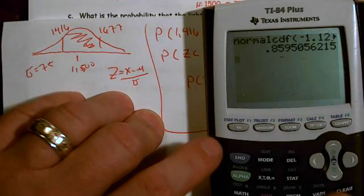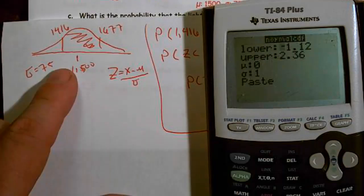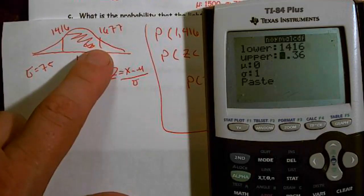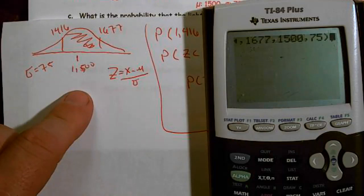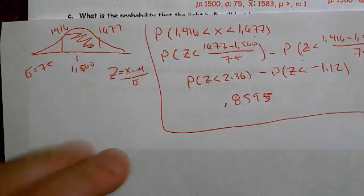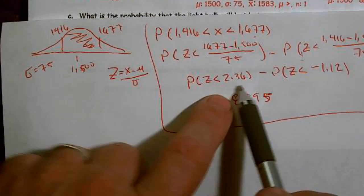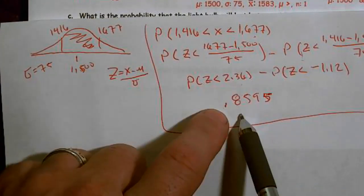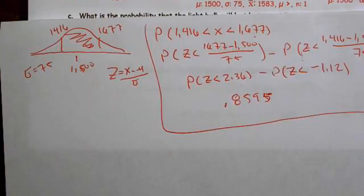I could have also done this using actual values — second VARS, normal CDF, with 1416 as my lower bound, 1677 as the upper bound, 1500 as the mean, and 75 as the standard deviation. Please make sure, regardless of how you go about doing it, that you show all of this work — that's what is required to get full credit. I need a probability statement, I need to plug into the Z formula, I need to show the Z scores, and then give the actual probability. The diagram is likely to get partial credit if some of the other work is incorrect. Hopefully that helps. Thank you.